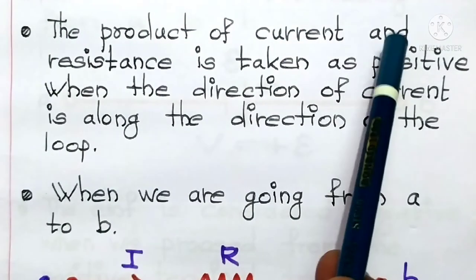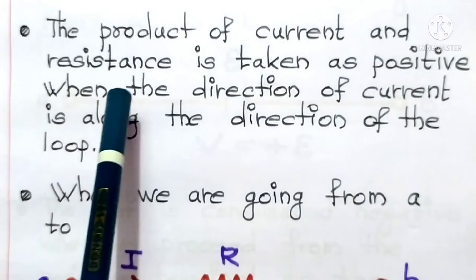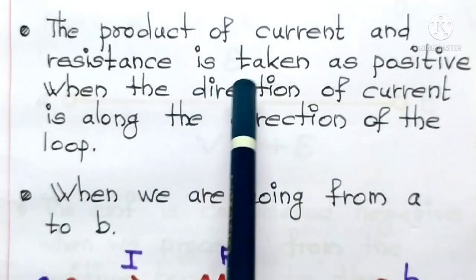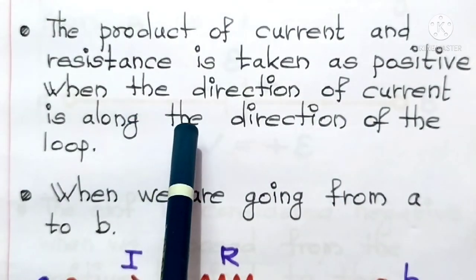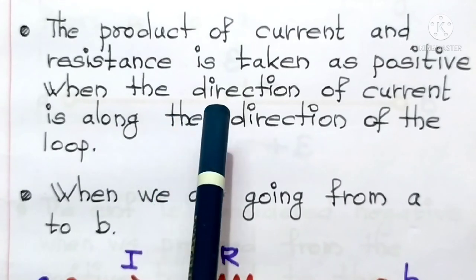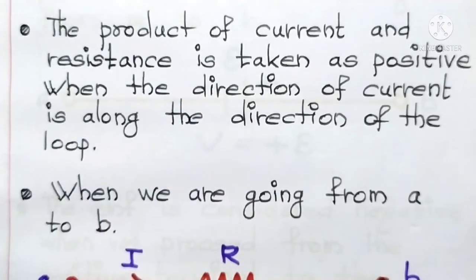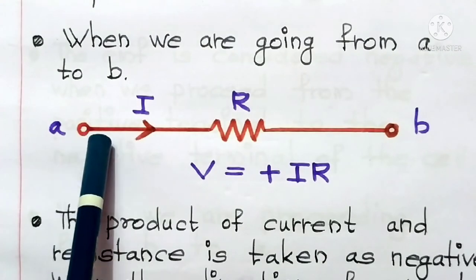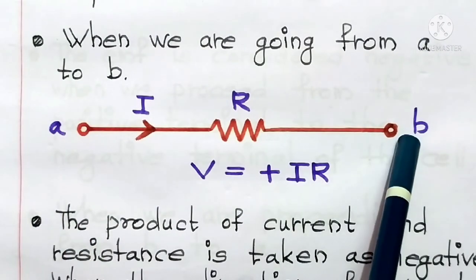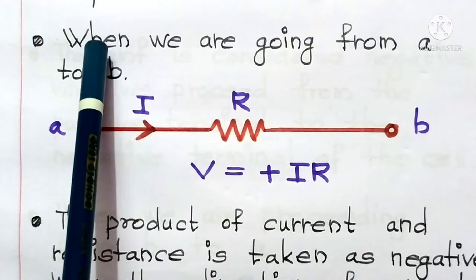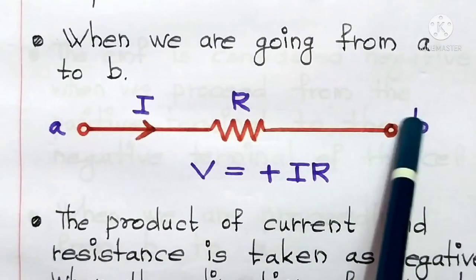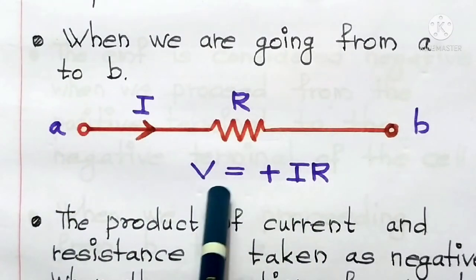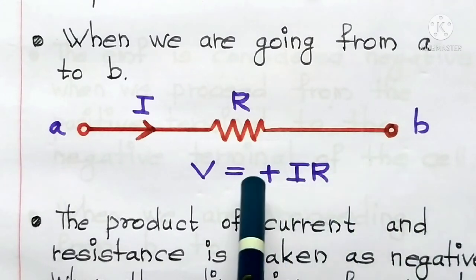The product of current and resistance is taken as positive when the direction of current is along the direction of the loop — that is, when the direction of current is the same as the direction in which we are moving from one place to another in the loop. For example, when we are going from A to B and the current is also in the same direction, V is equal to plus IR, so the product IR takes the positive sign.